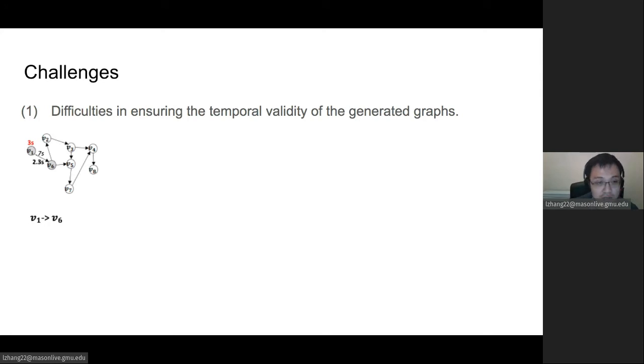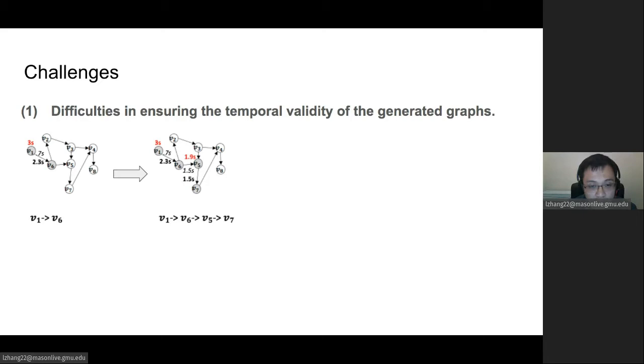First, let's talk about the challenge. There are difficulties in ensuring the temporal validity of the generated graphs. For example, we can see here in three seconds, that is the total time budget. In 0.7 seconds, there is the edge from v1 to v6. Then in another 1.5 seconds, you will have another edge connection from v5 to v7. Since the other edge, like v4 to v8, needs 1.9 seconds to happen, it will be closed because there's no time left. So the graph will be completed to the end.